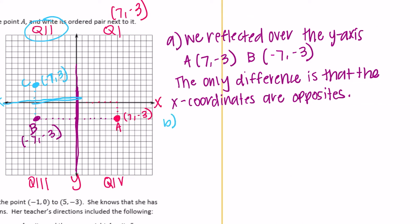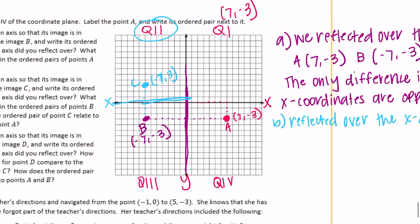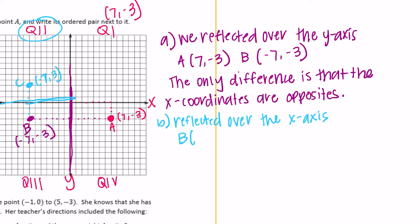For part B, we reflected over the x-axis. What is the only difference in the ordered pairs of points B and C? B was (-7, -3) and C was (-7, 3), so the only difference is that the y-coordinates are opposites.